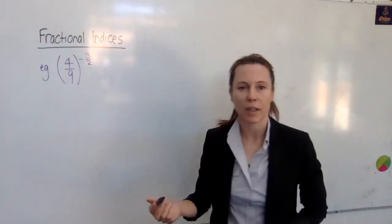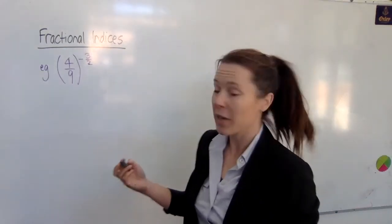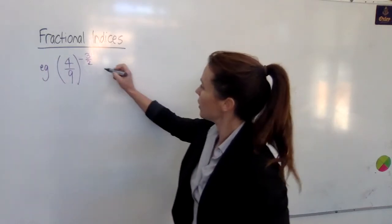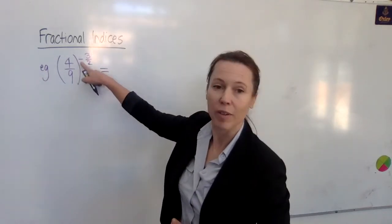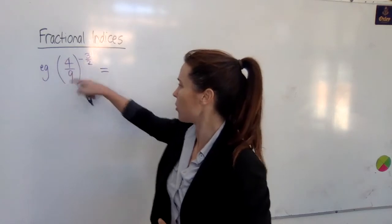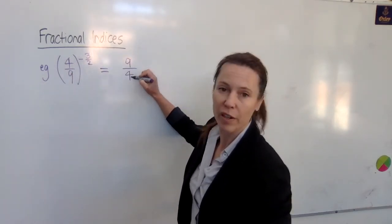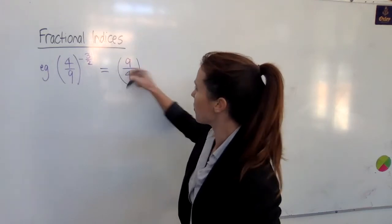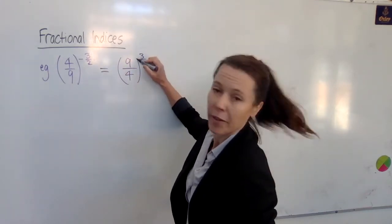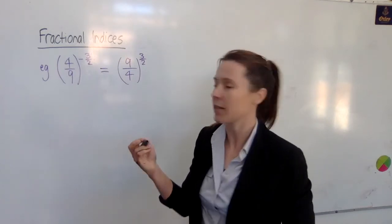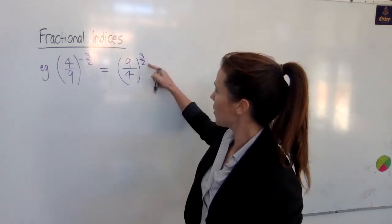So here we have an example where we need to do all of those things. Let's start by getting rid of the negative up there by taking the reciprocal of the whole expression. So that means I'm going to get nine over four instead of four over nine, but it's going to be now raised to the power that is exactly the same except no negative there anymore, so I've adjusted for that.